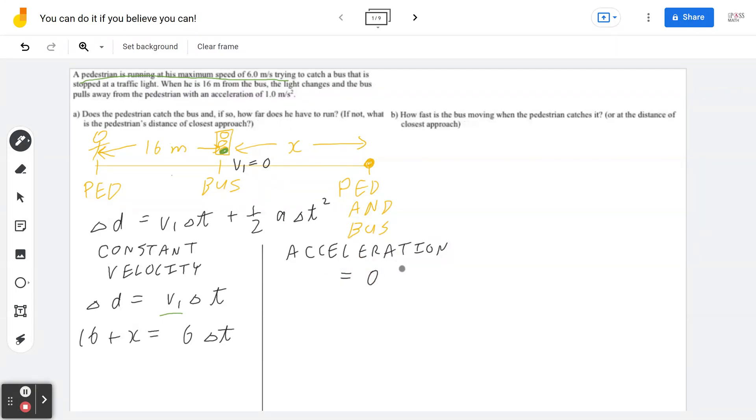We're still using the same starting point: d equals v1 times t plus half at square. The major difference is since the velocity is going to be 0 at the beginning because you're at a traffic light and you're stopping. And when the traffic light goes from red to green, you're now moving. So it's going to be half at square. a is going to be 1.